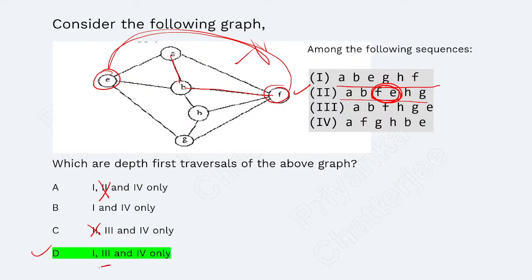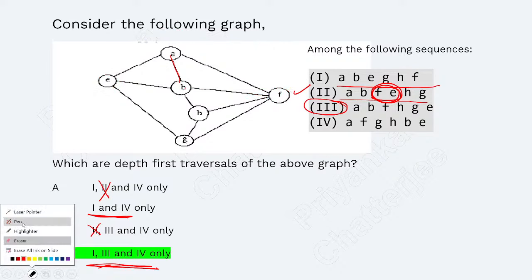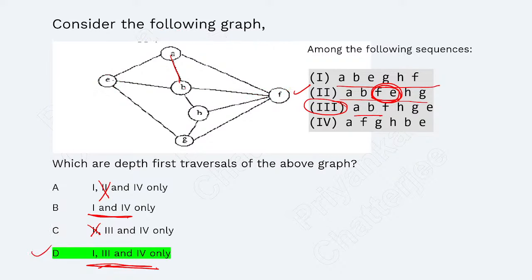Checking option 3: A to B, B to F, F to H, H to G, G to E — yes, that is correct. So options 1, 3, and 4 are valid DFS sequences. Since option 4 also appears valid, the answer is D (options 1, 3, and 4 are correct). BFS and DFS should now be clear to everyone.